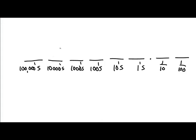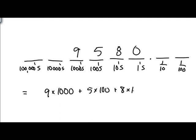But if you have a number like 9580, that means we have nine thousands, nine times a thousand, plus five times a hundred, plus eight times ten,